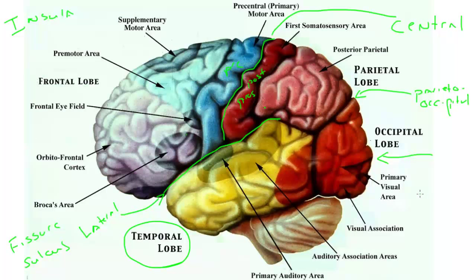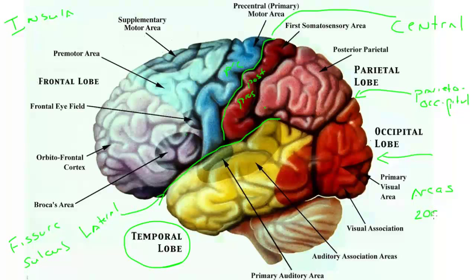Each lobe is populated by some number of what are called cortical areas. An area of cortex has a unique set of inputs, a unique set of outputs, and a unique set of functional properties. These vary in number from one species to the next. Humans are said to have something on the order of 200 separate areas, though a lot of that is incomplete data.